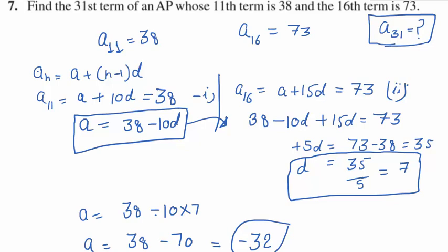To summarize: to find the 31st term we need a and d, but these were not given directly. Instead, the 11th and 16th terms were given. Using the nth term formula we formed two equations in two variables a and d. Solving gives a equals minus 32 and d equals 7. Substituting into a plus 30d gives the 31st term as 178.